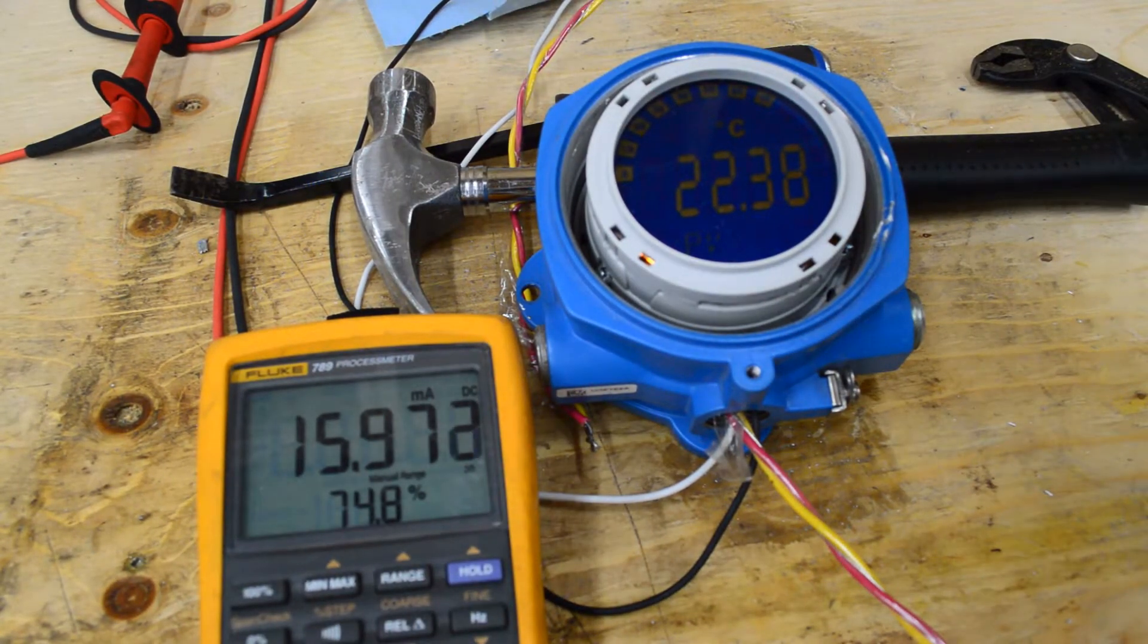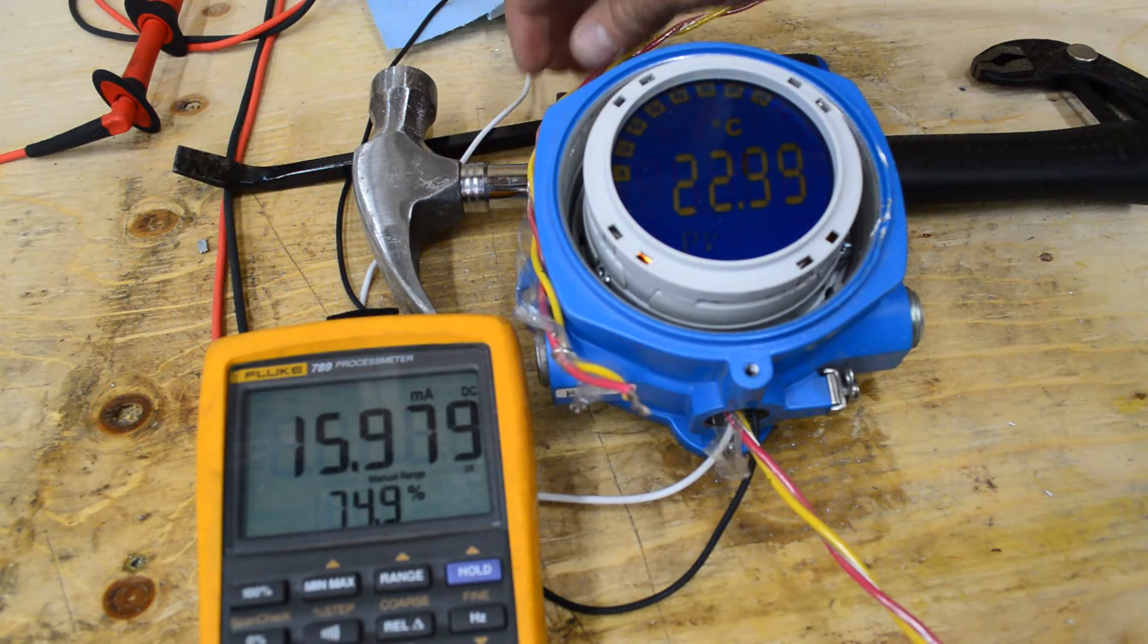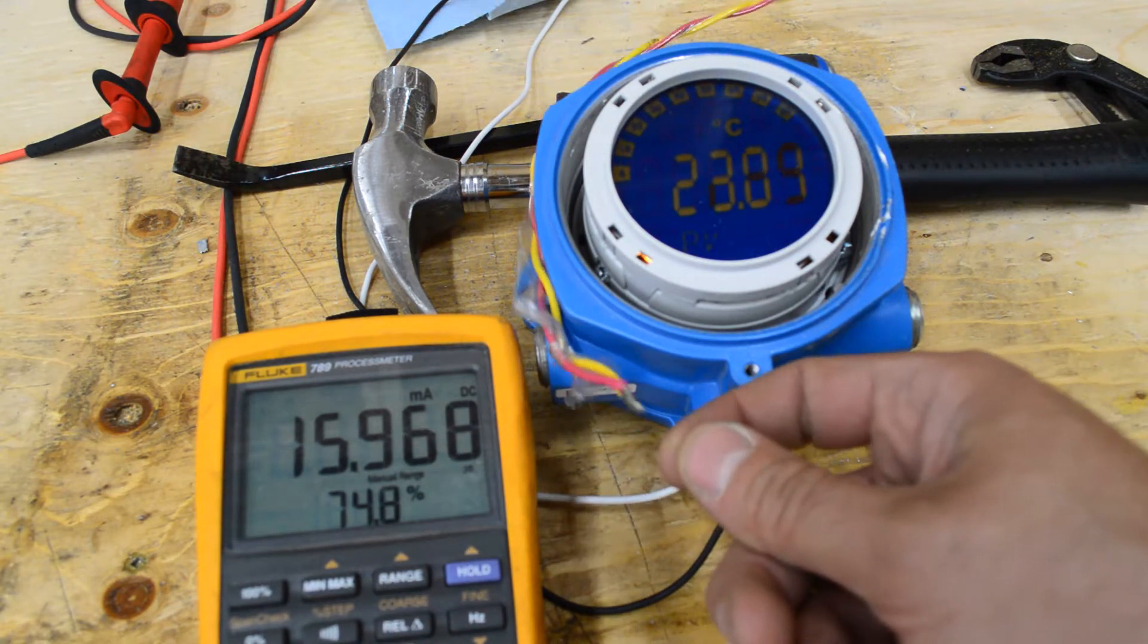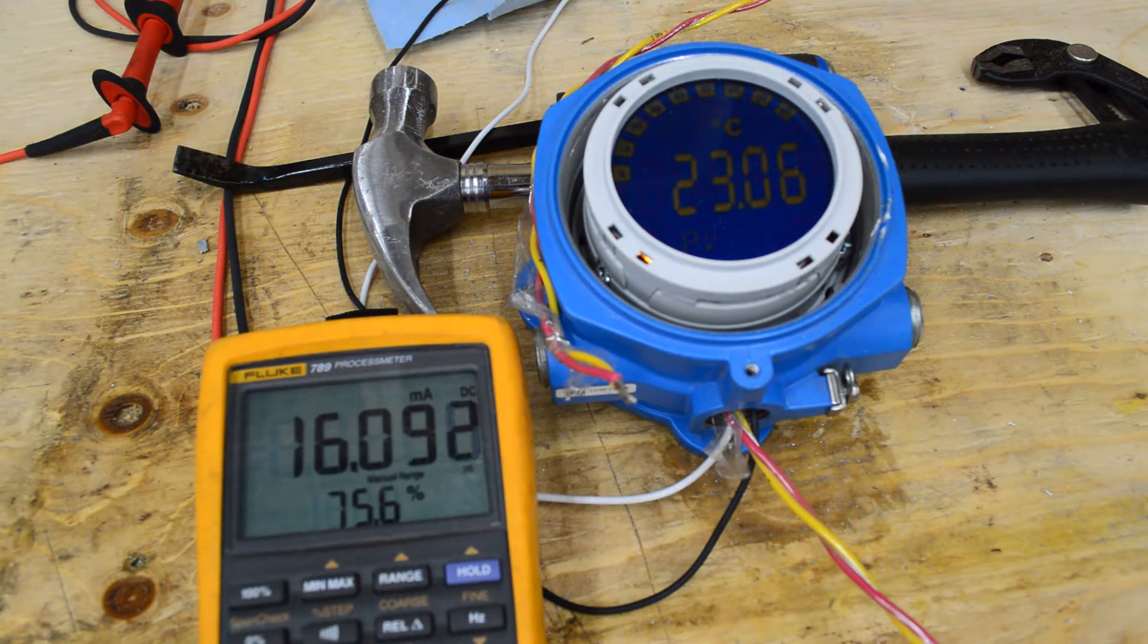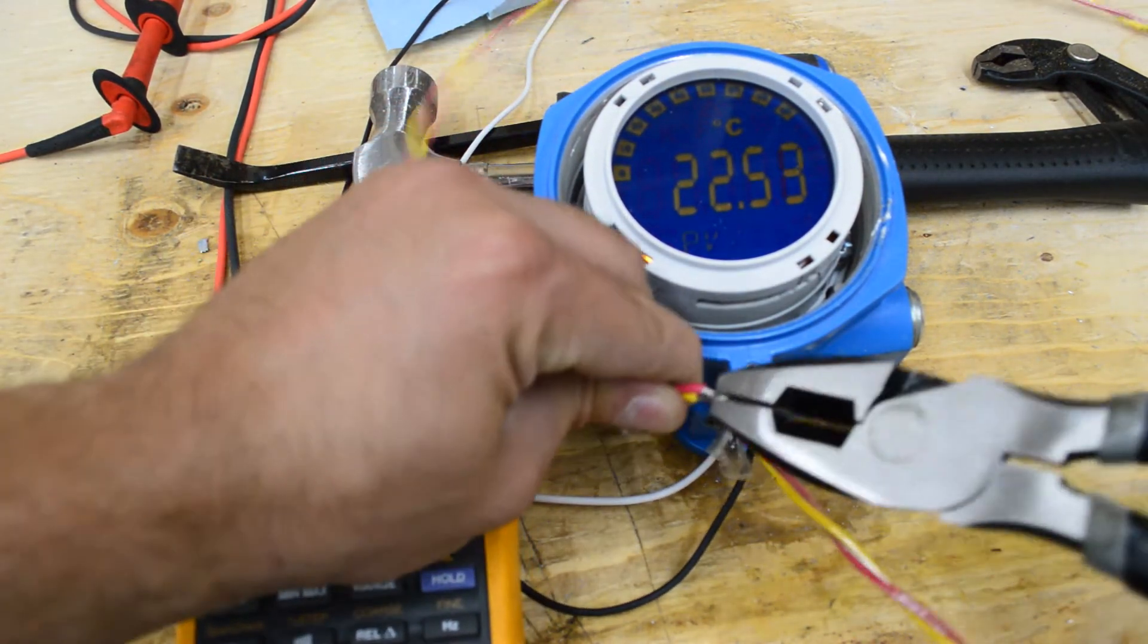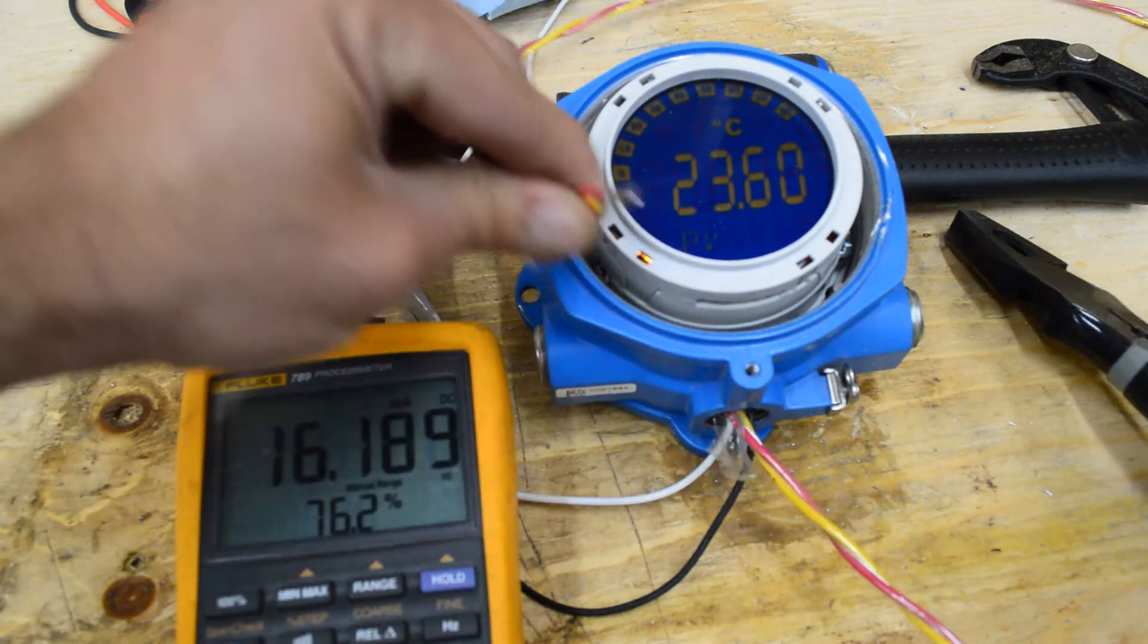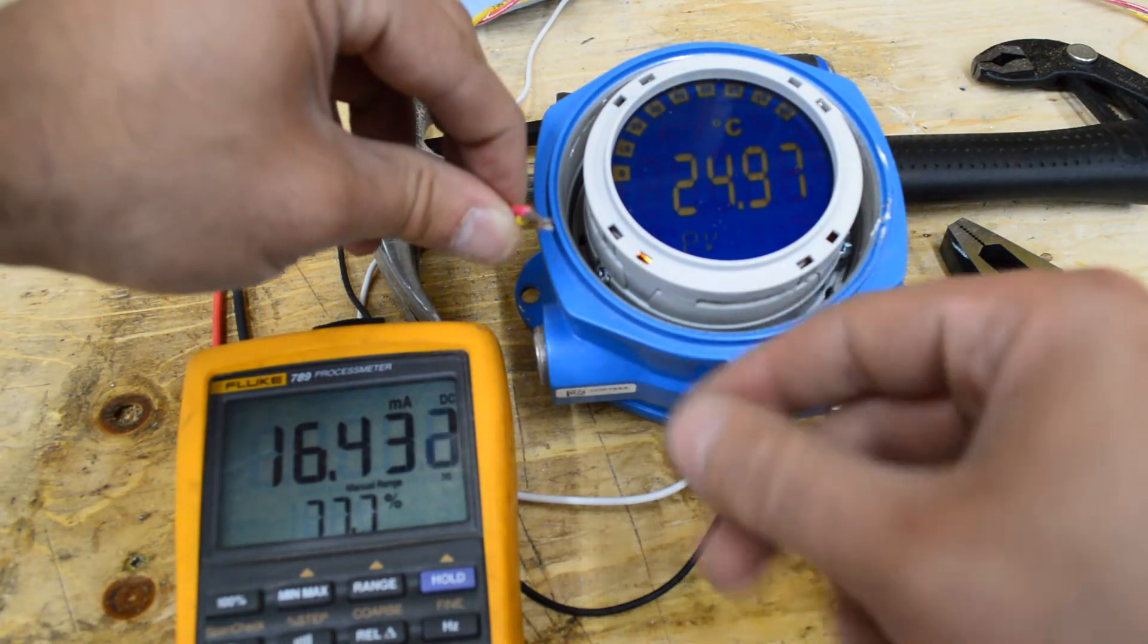There is one more thing that we should be checking here. That is the fail mode on it that I was talking about earlier. And that will come about if this junction here opens or if I cut the wire. So, if I untwist this, for now we have it set to go high. So we should get over 20 milliamps once I open this up.